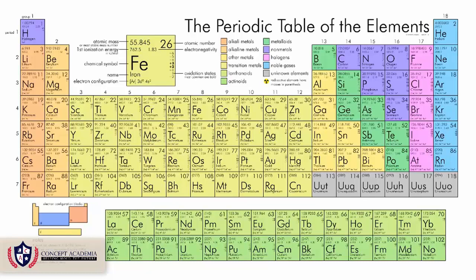There are some basic properties of these three particles. The periodic table before us has two numbers, and these two numbers are very important. For example, for iron, this is the smaller number — 26 — and this is the bigger, larger number — 55.845.